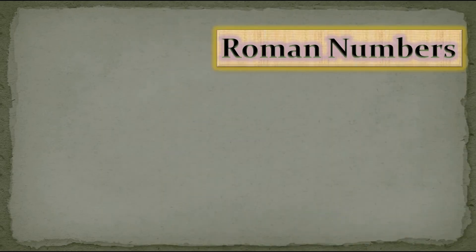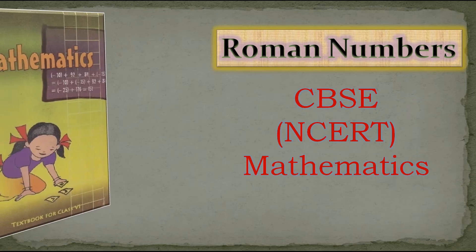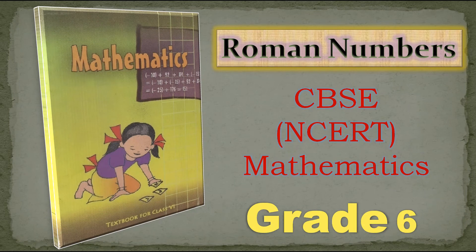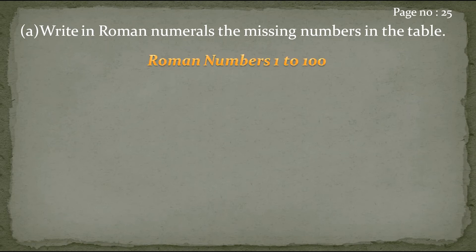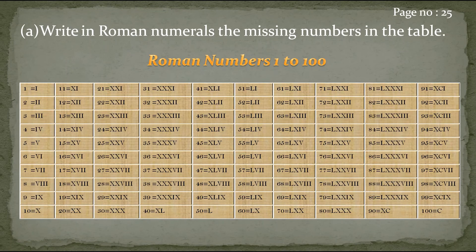Now we have covered all the rules of Roman numbers. We will now solve some sums from the textbook of CBSE and CRT Mathematics of Grade 6. On page number 25, the question is: write in Roman numerals the missing numbers in the table. In your textbook they have given some Roman numerals without writing all from 1 to 100, and we have to write the missing numbers. Here I have given all the Roman numbers from 1 to 100 alongside their Hindu-Arabic equivalents so you can go through them.